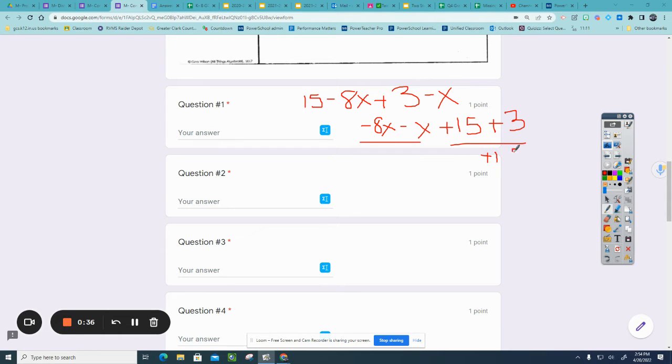Combining, 15 plus 3 is 18, and 8x minus one more x would be negative 9x. So you will type your answers with no spaces, negative 9x plus 18.